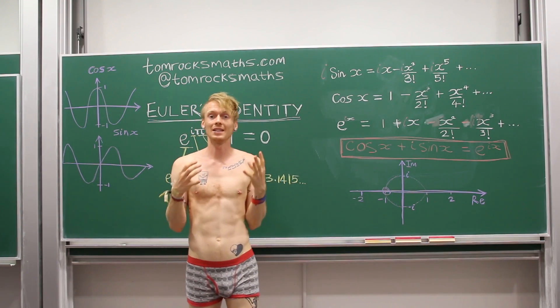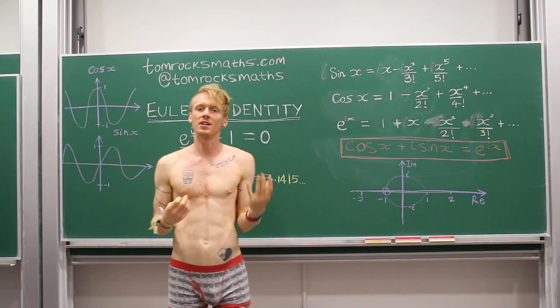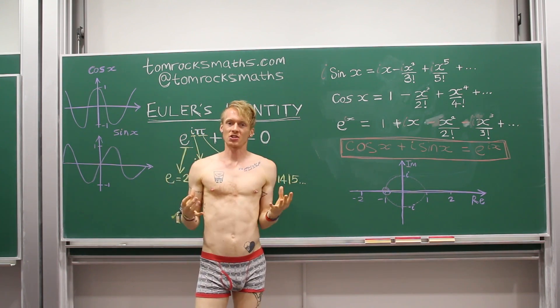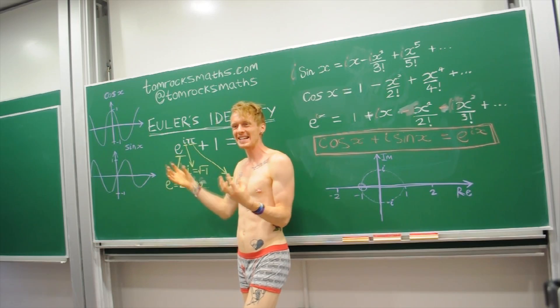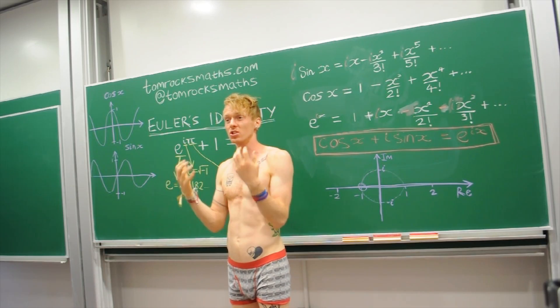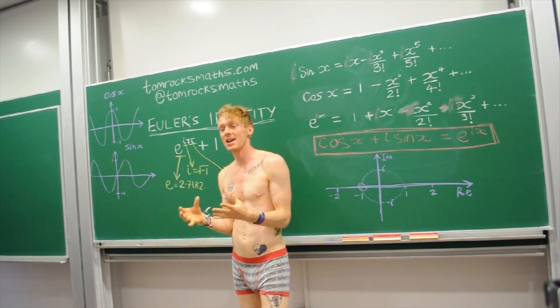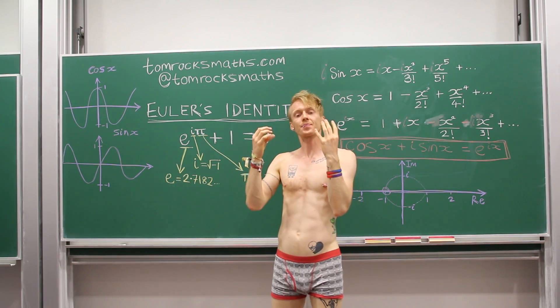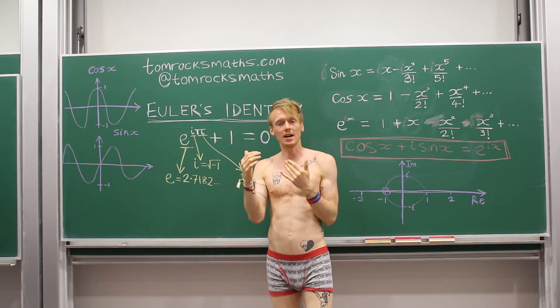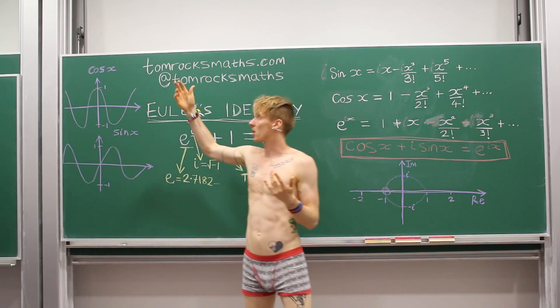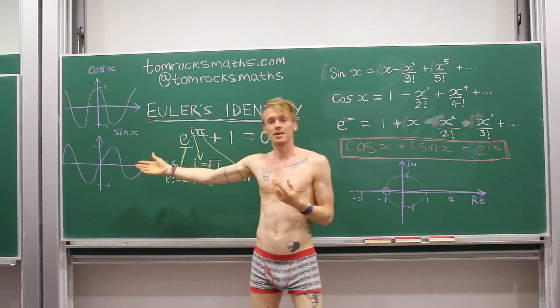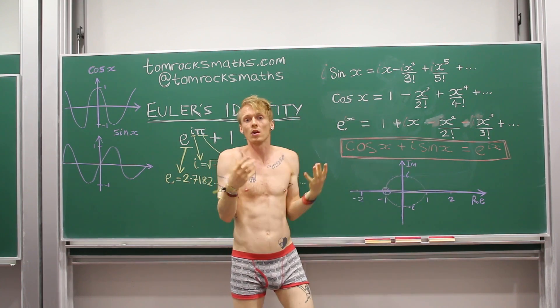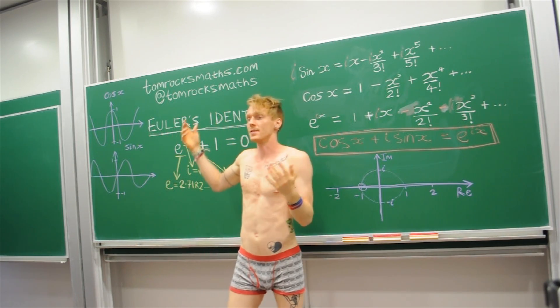For our third and final layer stripping back Euler's identity, we're going to think about what it means geometrically, because this equation, hiding underneath there, is just the unit circle, so a circle of radius one. And to see this, the first thing we have to think about is the graphs of sine and cosine. So we've got cosine at the top, sine underneath.